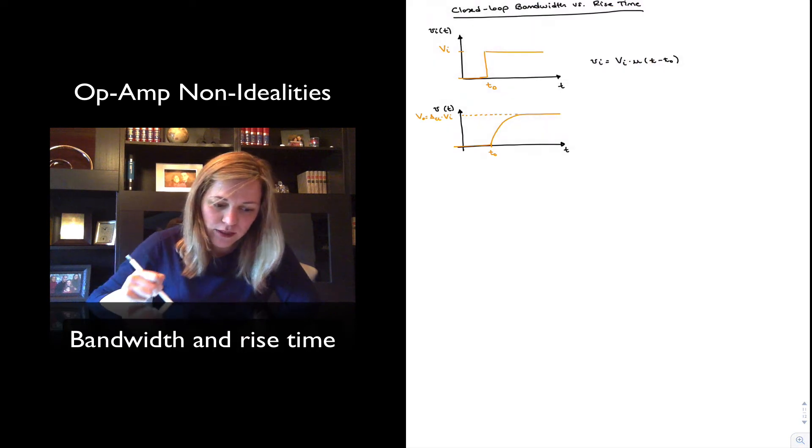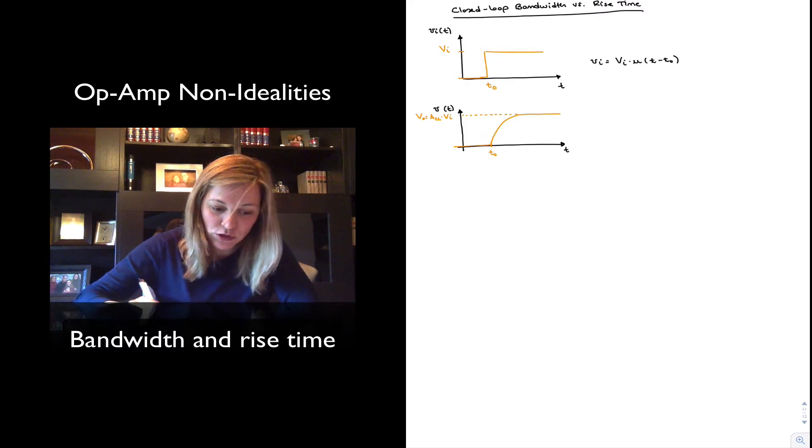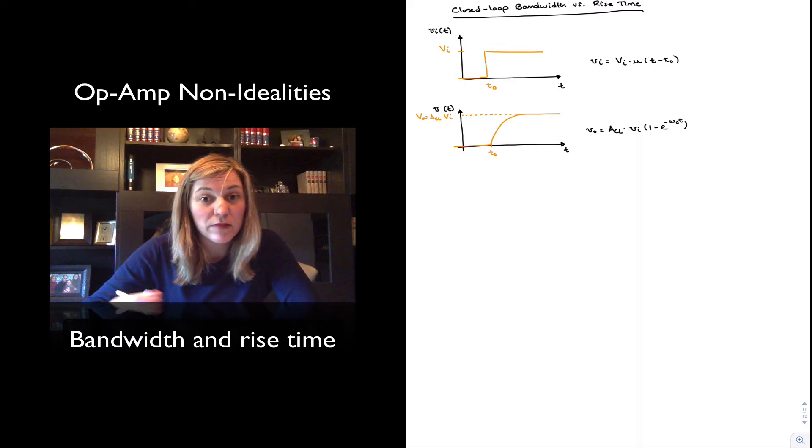Now, important thing to notice, if this is just the effect of a bandwidth limitation, notice the shape of the output signal. So it's the shape of a decaying exponential, negative exponential function, right? Because our V out is going to be of the form ACL, the closed loop bandwidth times V in one minus e to the negative omega c times t, where omega c is the cutoff frequency or the closed loop bandwidth.